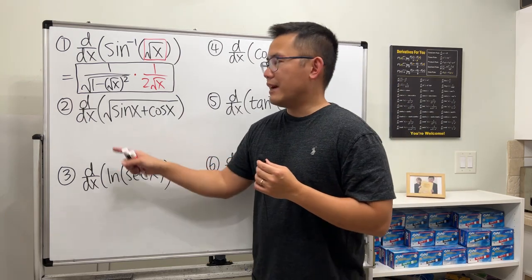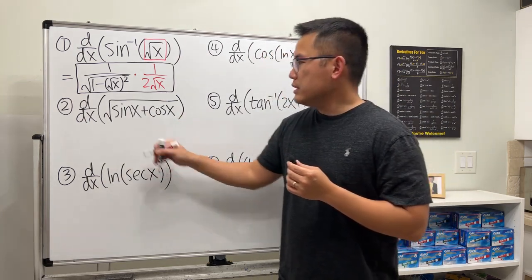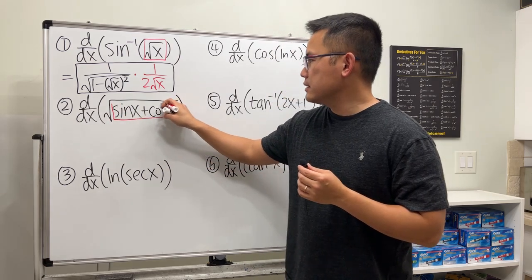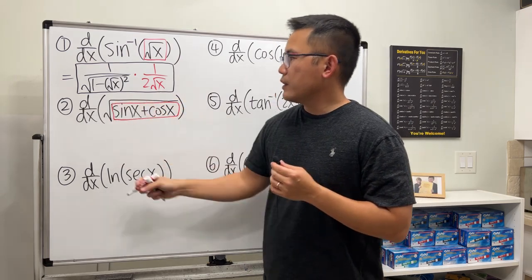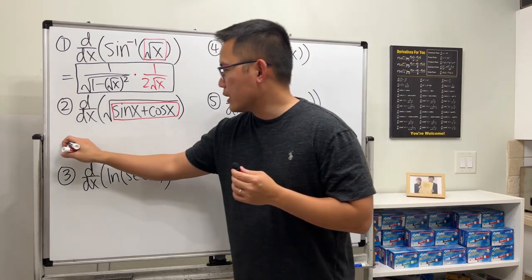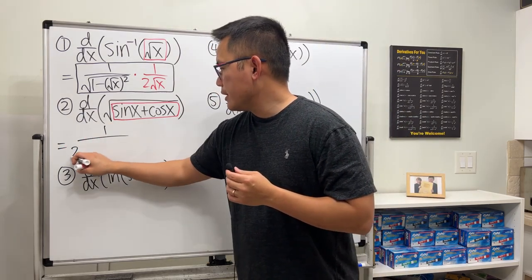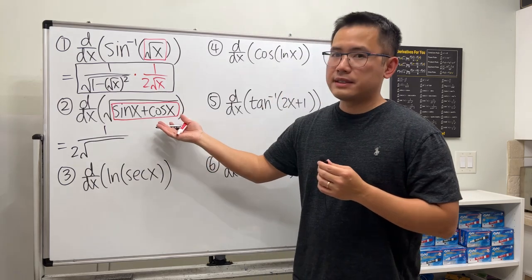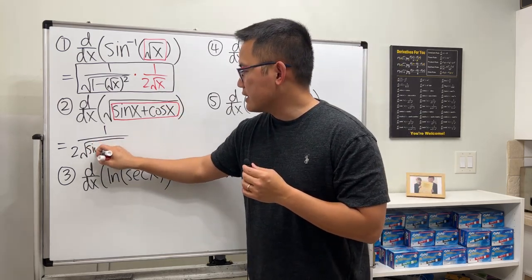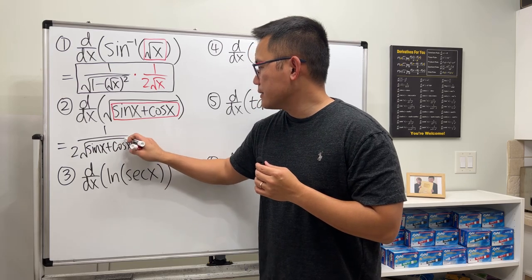Next we have the square root of sine x plus cosine x. In this case we have a square root of a box — just think about it like that. We differentiate the square root first and that gives us 1 over 2 square root of the box, so write down inside: sine x plus cosine x.